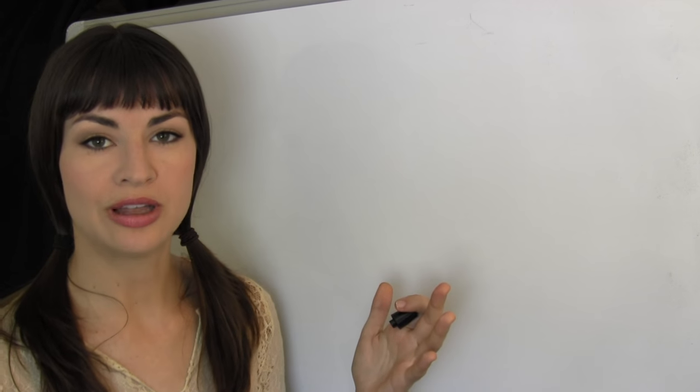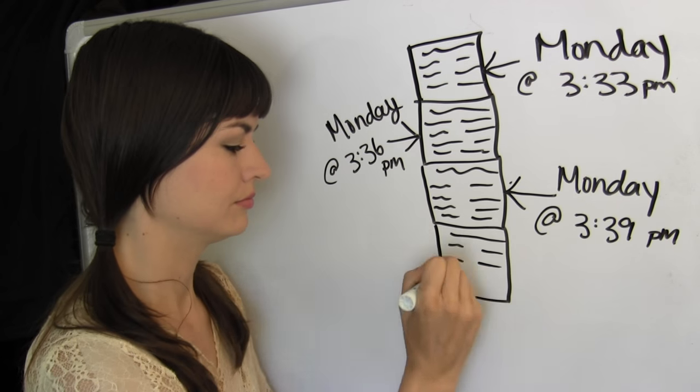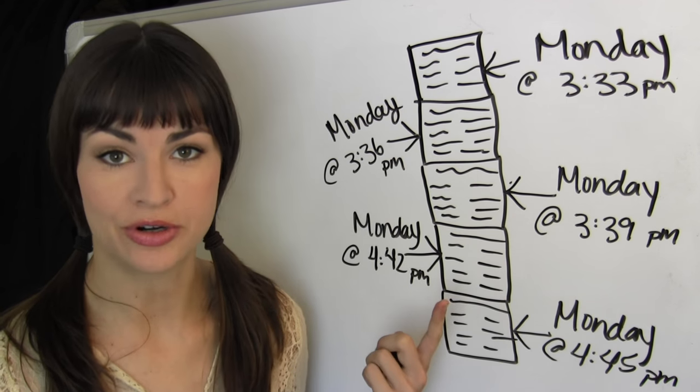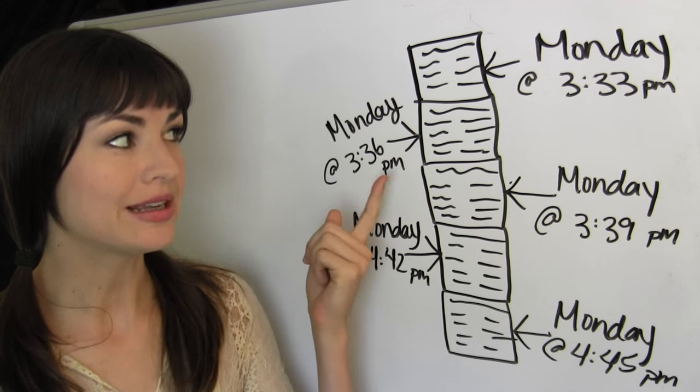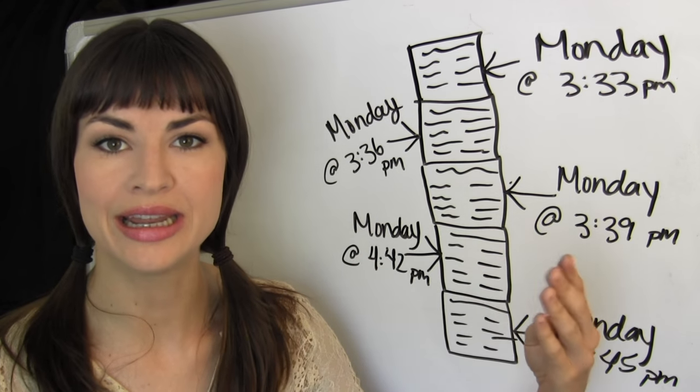Remember how a blockchain can be visualized by something like this? Time-stamped updates to a ledger, right? Well, those updates, as you'll recall, only come through every so often, every number of minutes.